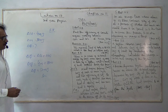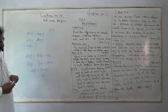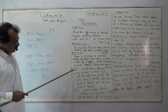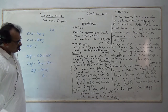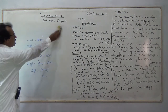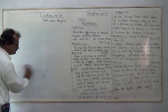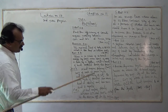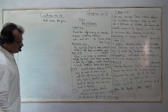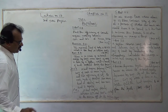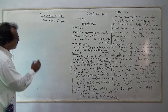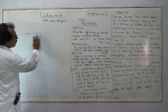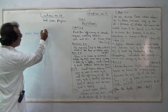Heat supplied to the system equals 400 plus 800, so the heat supplied is 1200 Joules in each cycle.